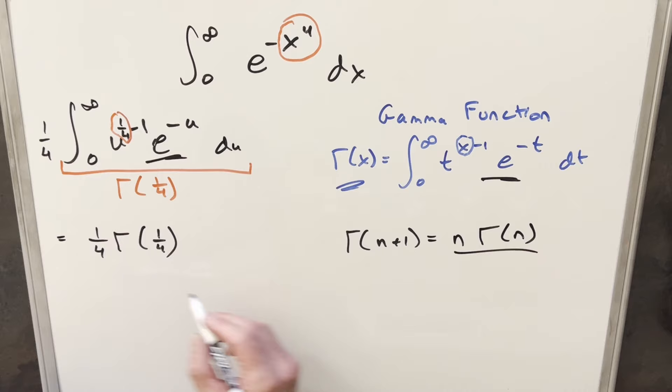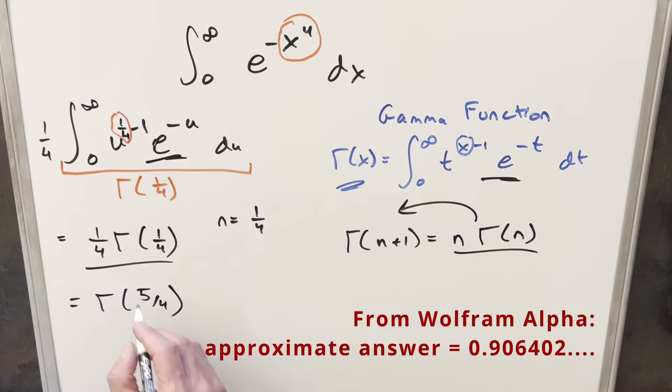So notice this right here is like the same thing as what we have right here, where n is going to be equal to 1/4th. So doing this in reverse, going this way, we can say this is going to be the same thing as 1/4th plus 1 or gamma of 5/4ths. And again, this here is difficult to reduce. So for my final solution, we just leave it as gamma of 5 over 4.